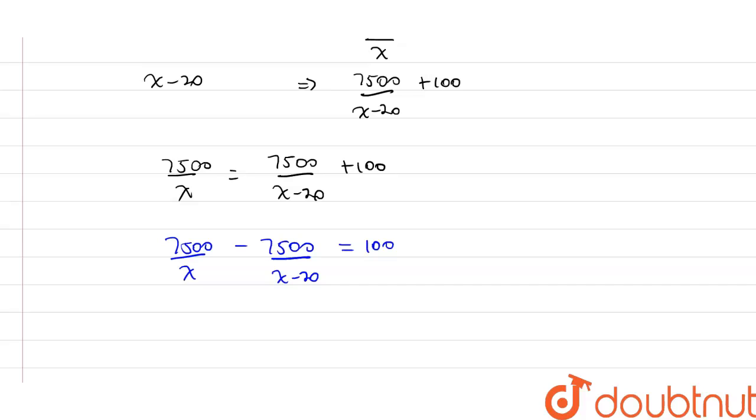We get 7500 divided by x minus 7500 divided by x-20 equals to 100. I can see that 100 is common in the numerator, so dividing the equation by 100...